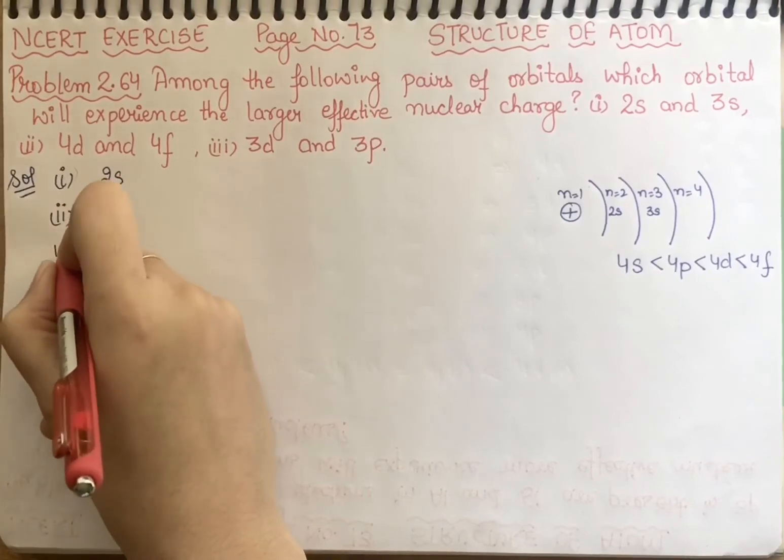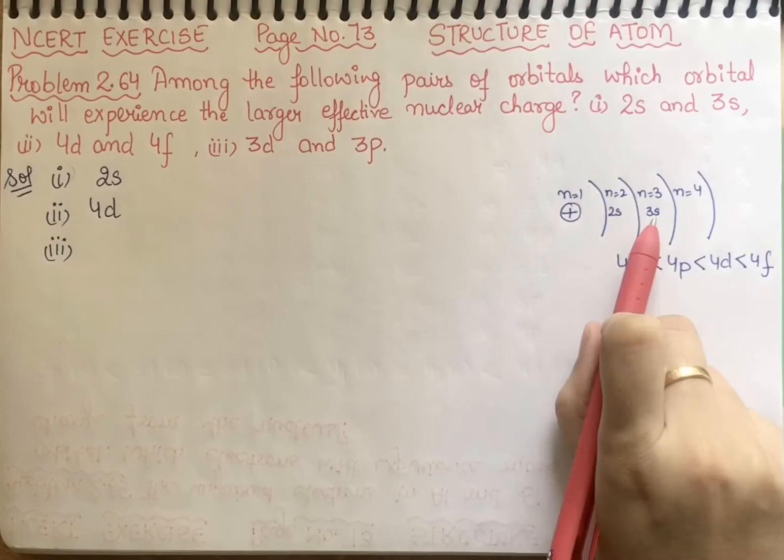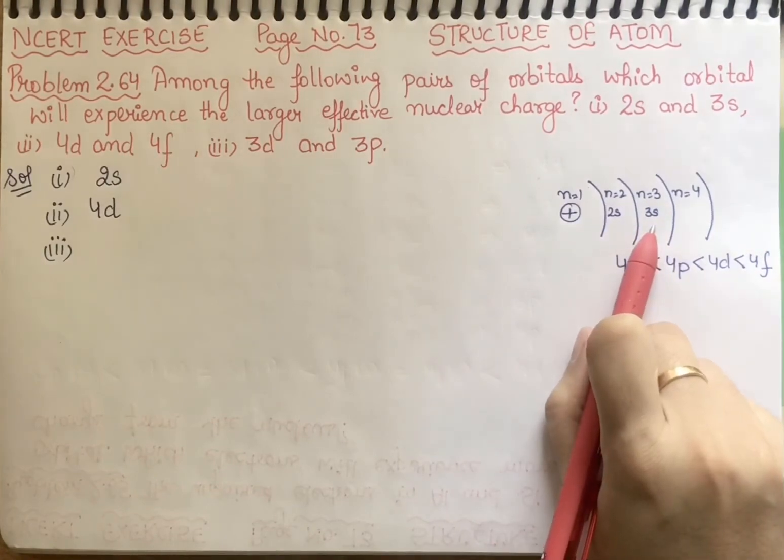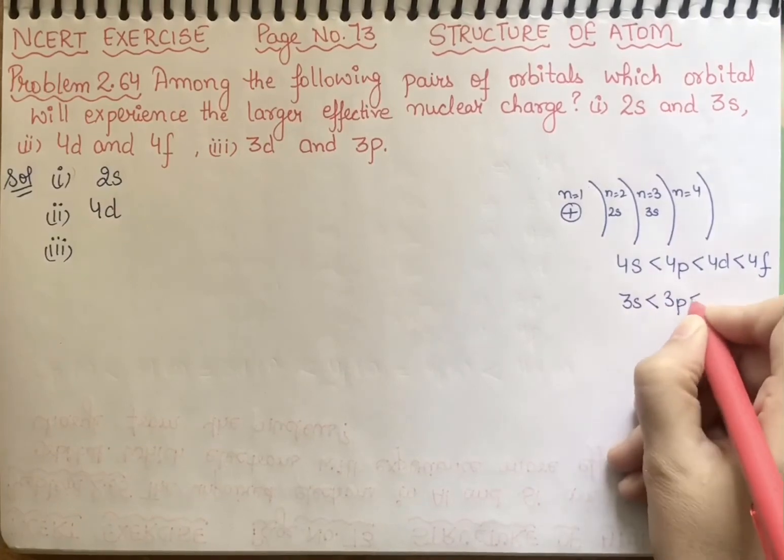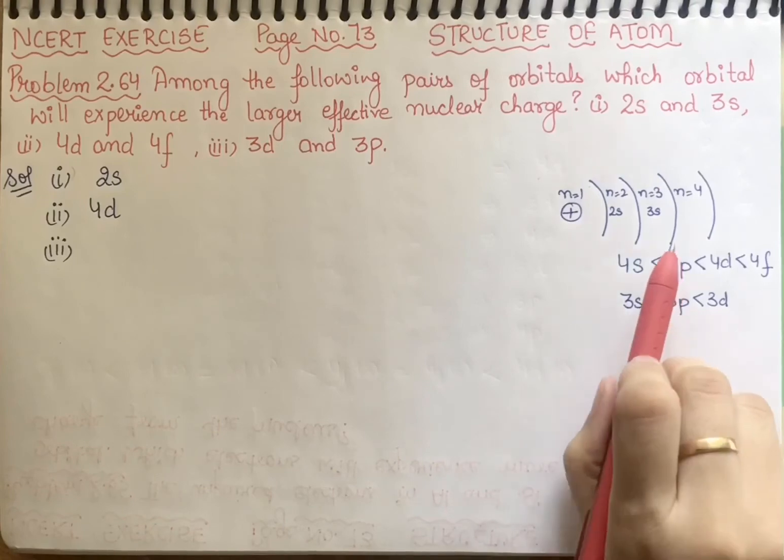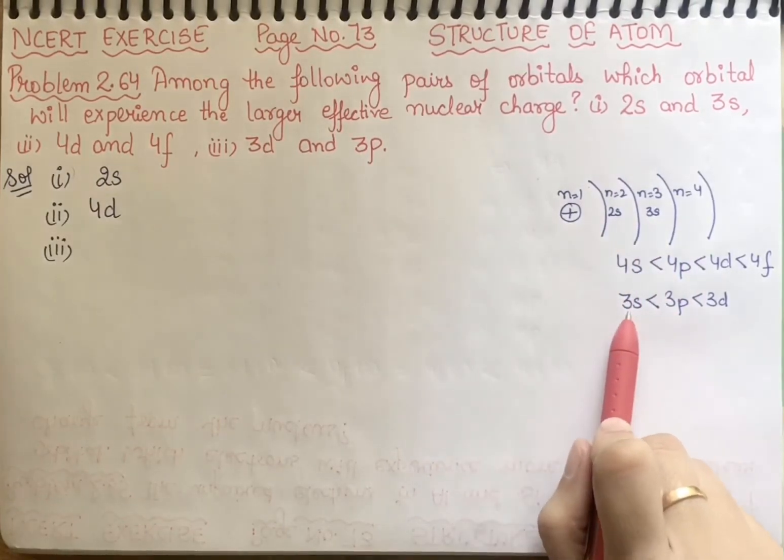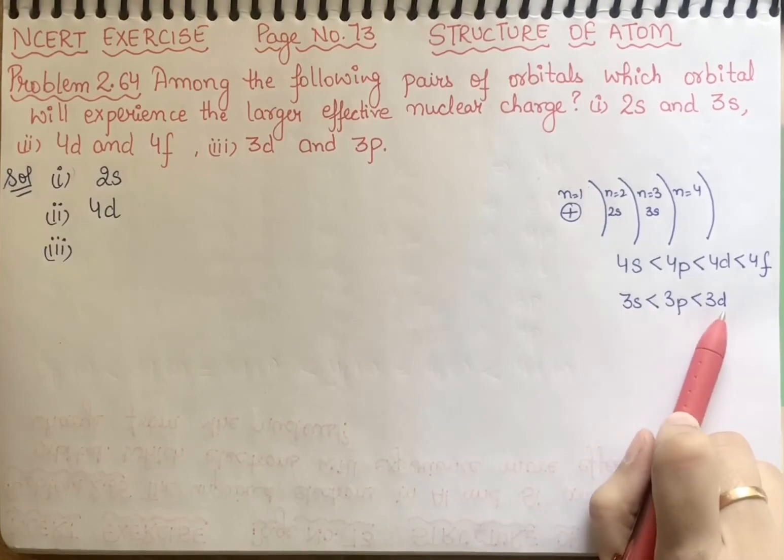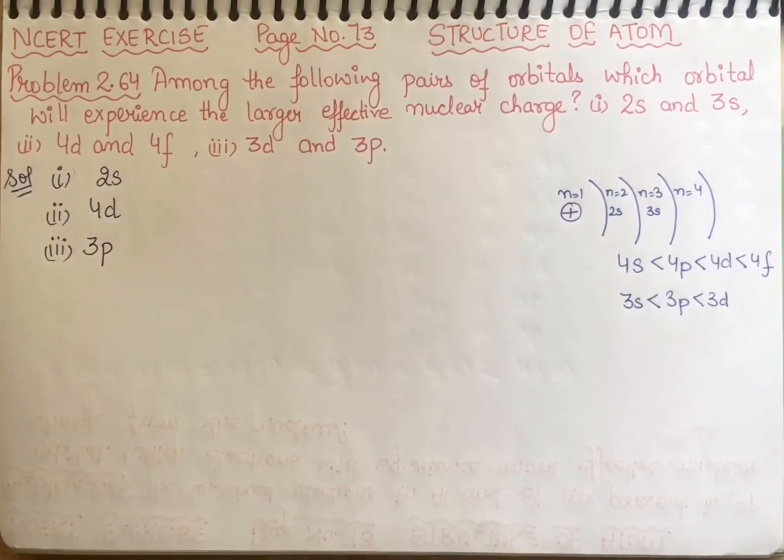Last case is 3d and 3p. Again we do this according to our orbit. So first 3s, then 3p, then 3d, and 3f exists. So obviously which nucleus will be closest? 3s, then 3p, and 3d. So definitely the charge will be 3p.